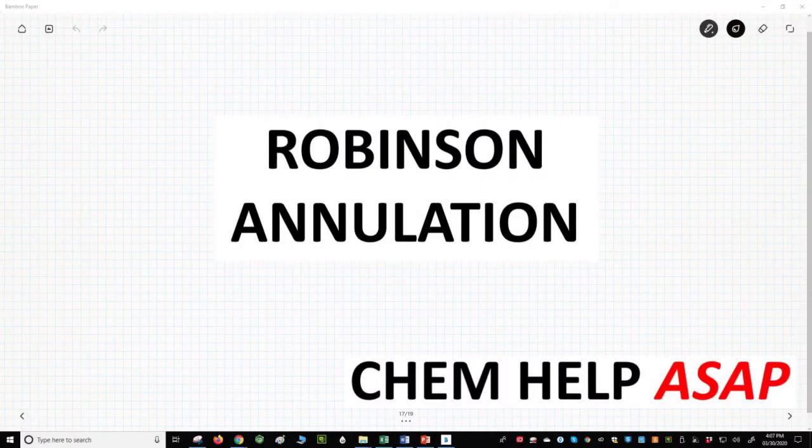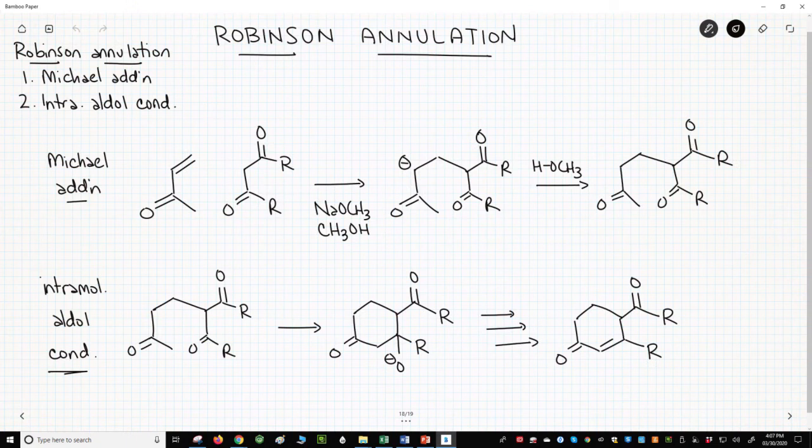Hello from ChemHelp ASAP. An advanced application of the Michael addition is the Robinson annulation. The Robinson annulation is two combined reactions.